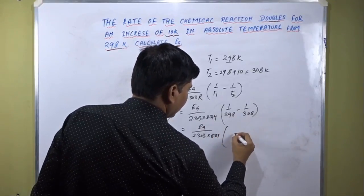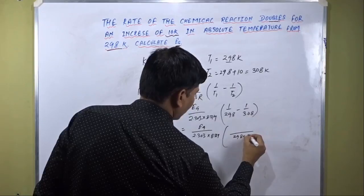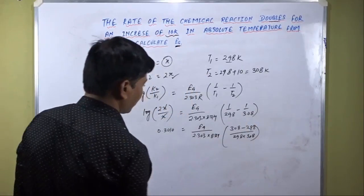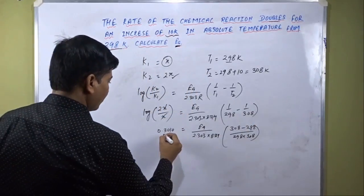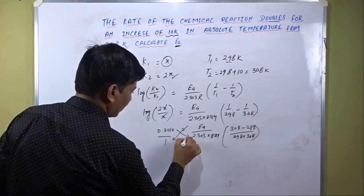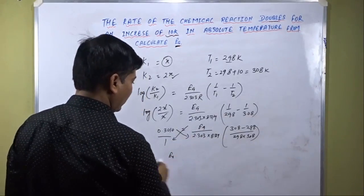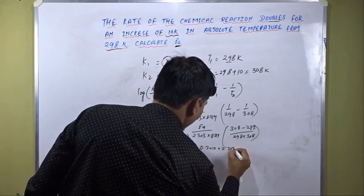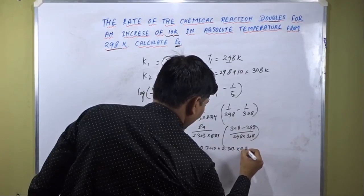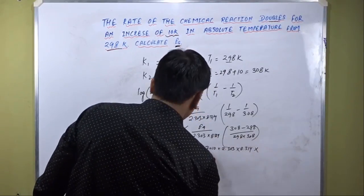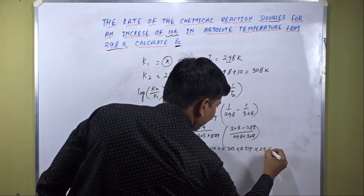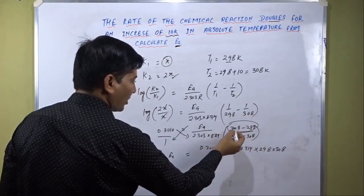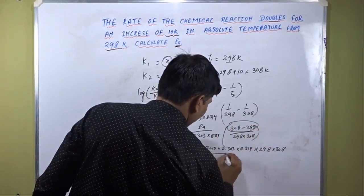Here we take the LCM of 298 multiplied by 308. We get 308 minus 298 in the numerator through cross multiplication. Then we get Ea on the left side. So we have 0.3010 multiplied by 2.303 multiplied by 8.314, multiplied by 298 multiplied by 308, divided by 10, since 308 minus 298 equals 10.